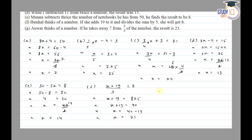Then part g: Anwar thinks of a number. If he takes away 7 from 5/2 of the number, the result is 23. The required number is x. So the equation is: 5/2 of x minus 7 is equal to 23.